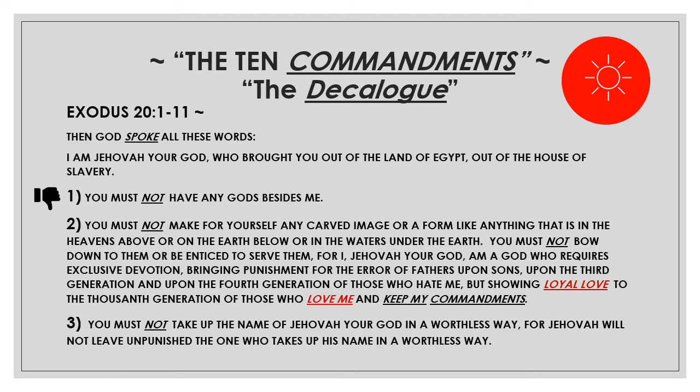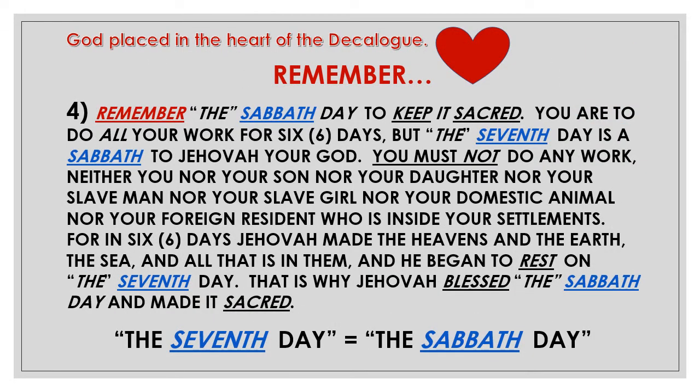Number three: you must not take up the name of Jehovah your God in a worthless way, for Jehovah will not leave unpunished the one who takes up his name in a worthless way. Number four: remember the Sabbath day to keep it sacred. You are to do all your work for six days, but the seventh day is a Sabbath to Jehovah your God. You must not do any work — neither you, nor your son, nor your daughter, nor your slave man, nor your slave girl, nor your domestic animal, nor your foreign resident inside your settlements. For in six days Jehovah made the heavens and the earth, the sea, and all that is in them, and he began to rest on the seventh day. That is why Jehovah blessed the Sabbath day and made it sacred. Notice: the seventh day equals the Sabbath day.